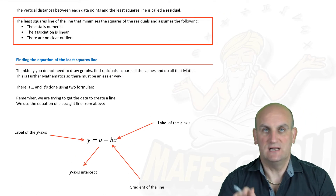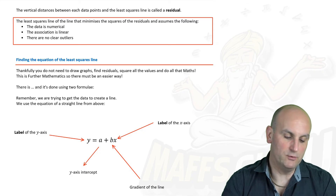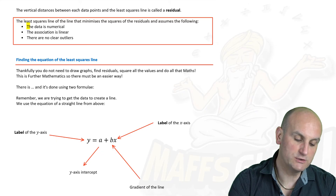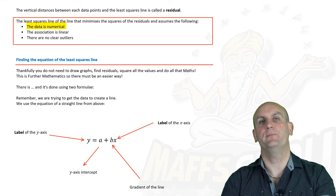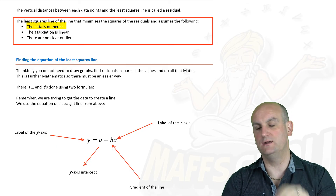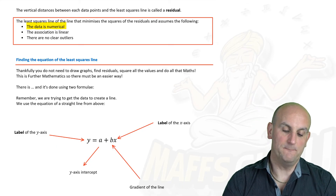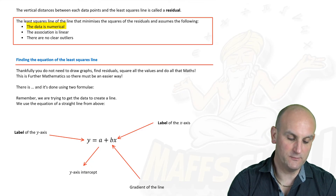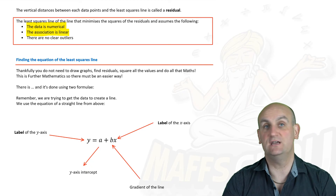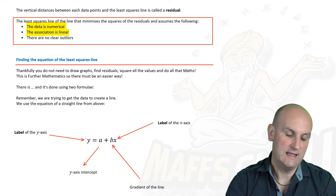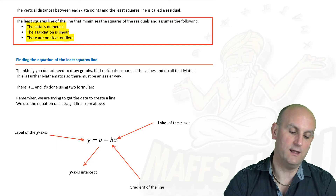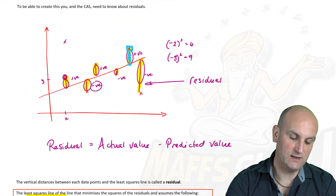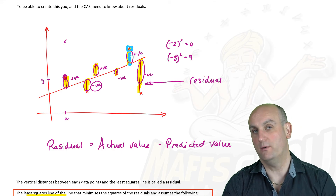To be able to use least squares lines, it is important that you know there are three conditions that must be met. One: you assume the data is numerical — I've seen this in exams; it will ask you for two of the three conditions or all three. The data is numerical. Two: the association is linear — the next chapter deals with non-linear. And three: there are no clear outliers. In this situation, if I had a data value way out there, that's probably an outlier.